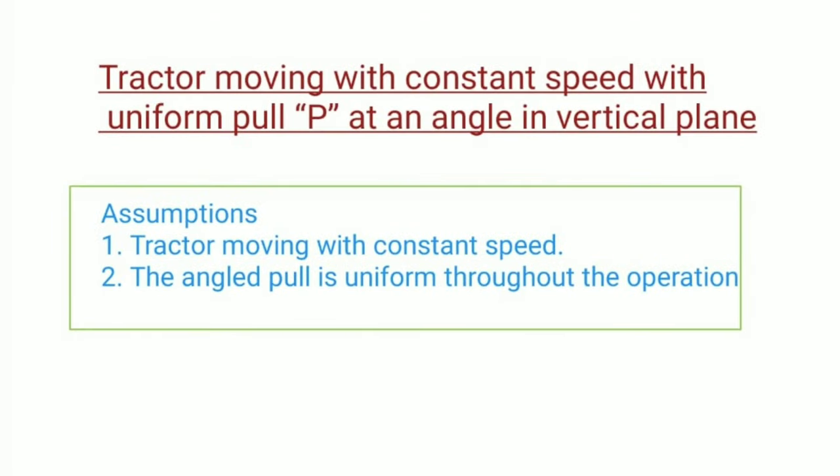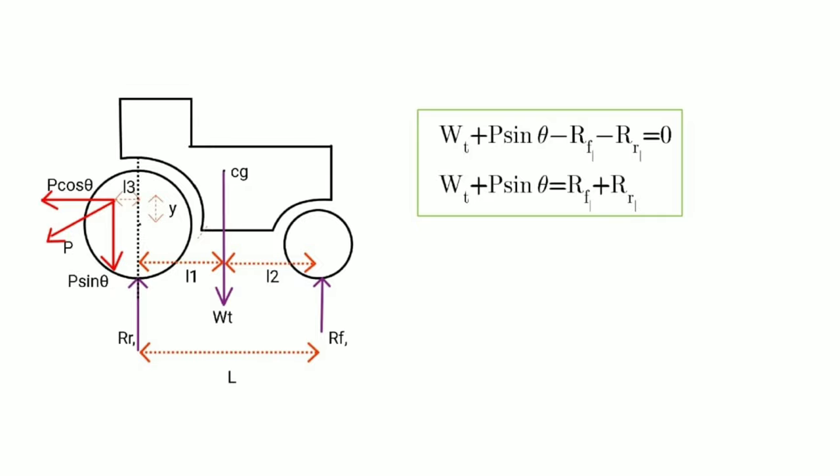Now consider second case: Tractor moving with constant speed and uniform pull P at an angle theta in vertical plane. It is considered that the speed and pull is uniform throughout the operation. Let's see how to analyze these forces and find out dynamic reactions on front and rear wheels. As shown in figure, pull P acts behind the rear axle. It makes an angle theta with horizontal in vertical plane. Pull P acts at distance L3 behind rear axle and at height h above rear axle. RF dash is the dynamic reaction on front wheels and RR dash on rear wheels.